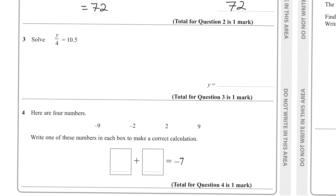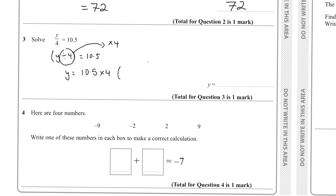Question three: y over 4 equals 10.5. A fraction is the same as dividing, so y divided by 4 equals 10.5. To find y, move the divide by 4 over the fence and it becomes times by 4. So 10.5 times 4 — that's the same as times 2 then times 2 again — gives 21 times 2 which is 42.